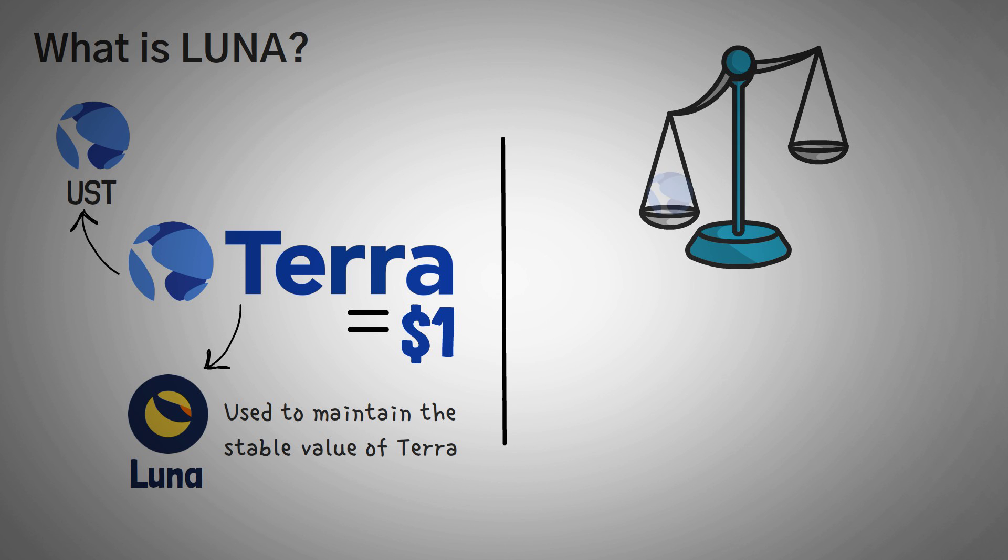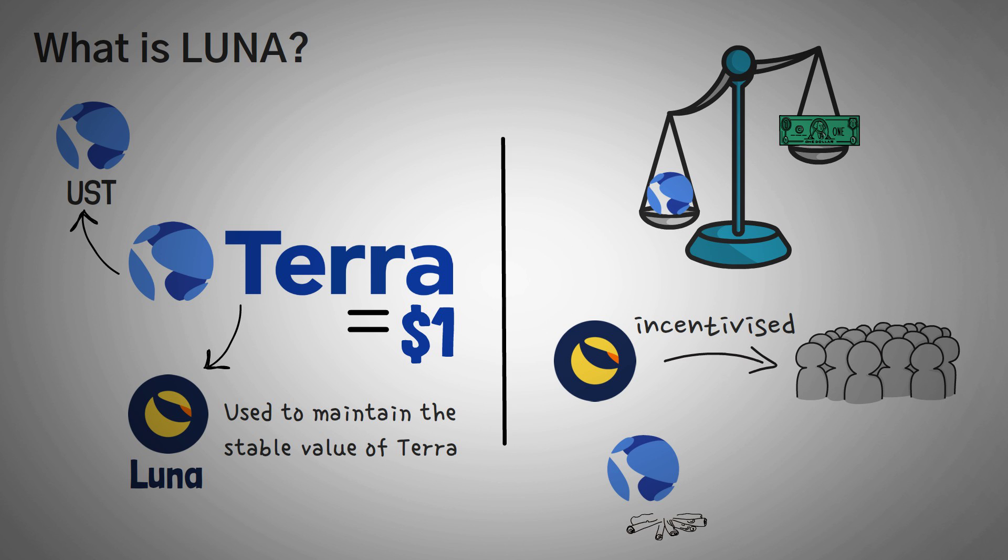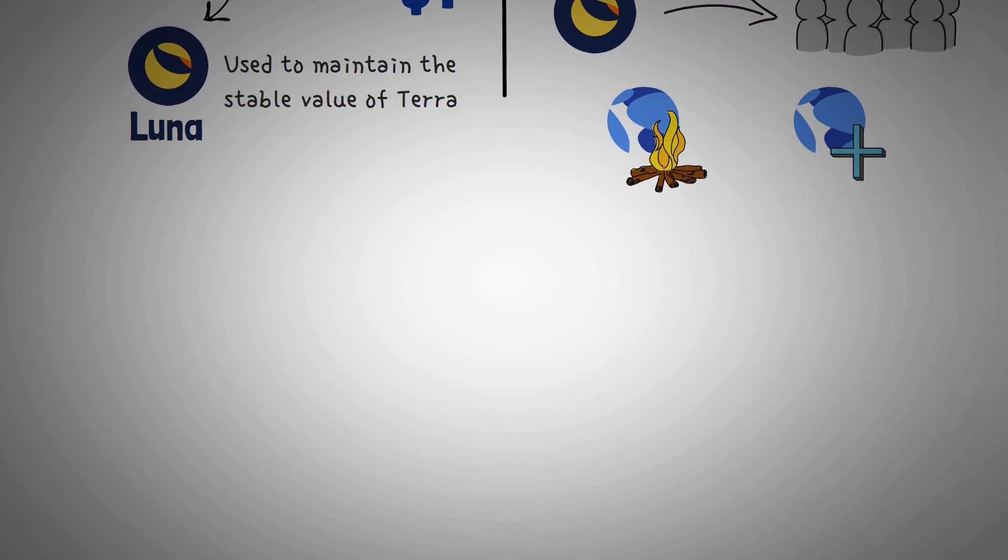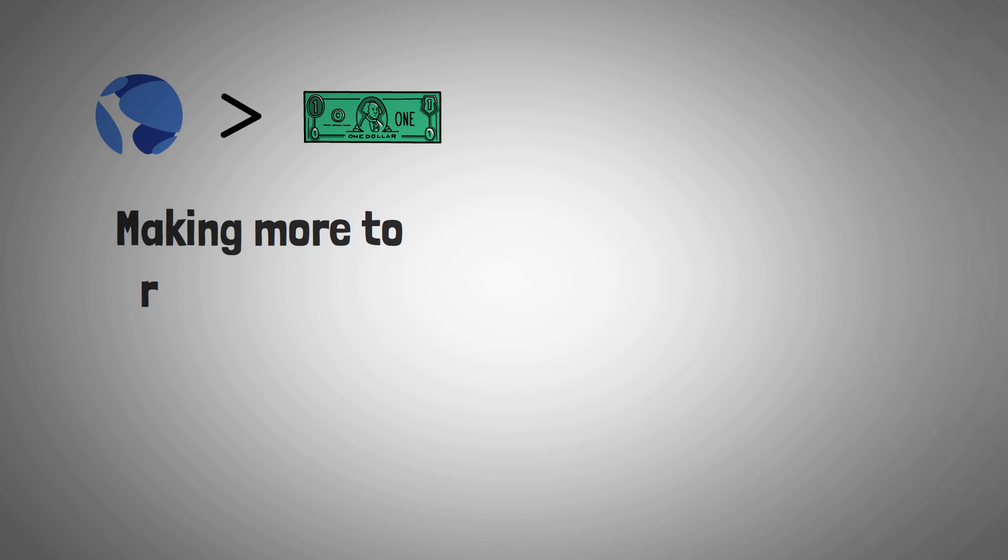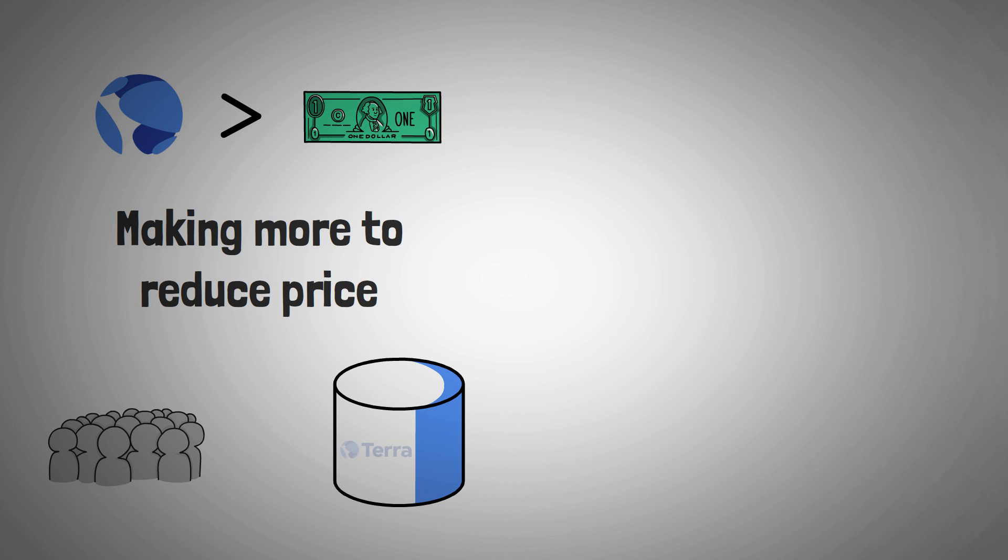When the value of UST is mismatched to the value of a real US dollar, basically they use Luna to incentivize people to do certain things to stabilize the price. They do this either by burning their UST or creating more of it to manipulate the value. And the people that proactively help the network stay stable are incentivized with profits. If Terra is over a dollar, the answer is simple. You can always reduce the price of something by making more of it. And that's exactly what they do. Now, you might be wondering, who do they give all these extra Terra tokens to? Well, they give them to the people that trade in their Luna tokens, but they do it for a very small, but also important profit.